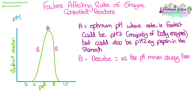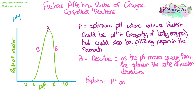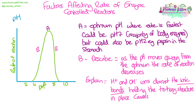Either side of the optimum, you're going to get a decrease in the rate of reaction, so we describe that by saying as the pH moves away from the optimum, the rate of reaction decreases. Just like temperature, we need to be able to explain this. pH affects enzymes because either an excess of H⁺ or OH⁻ ions is going to disrupt the ionic bonds — specifically the ionic bonds that hold the tertiary structure together. Because we're disrupting or breaking those ionic bonds, it causes the active site to change shape, and therefore it's no longer complementary to the substrate, so no ES complex is formed. Again, the enzyme has denatured.